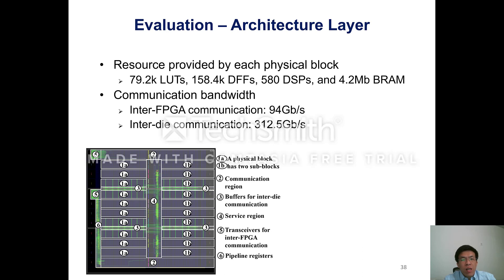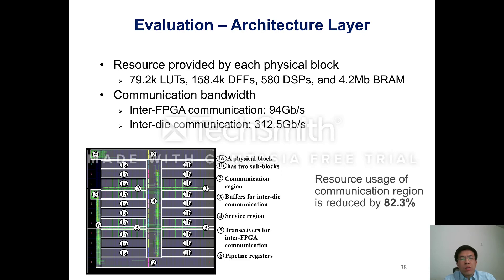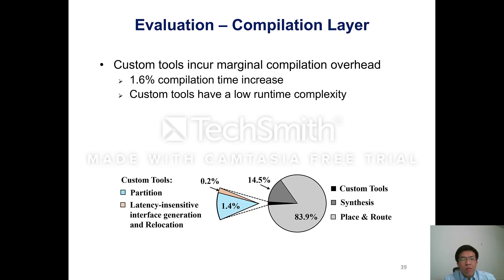The implementation of the abstraction on a commercial FPGA contains 10 physical blocks. We observe that the optimization on the latency-insensitive interface effectively reduces resource usage by more than 80%, and the resulting usage is controlled below 10% of total FPGA resources. The evaluation also confirms that the additional compilation steps only increase a marginal compilation overhead, since these custom tools have much lower runtime complexity than the placement and routing tool in the commercial FPGA framework.